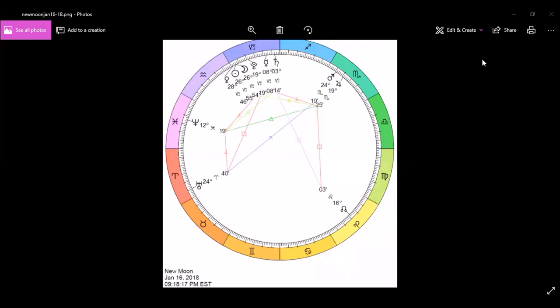Hey guys, it's me Stormy, and it is just about time to have this new moon in Capricorn. It's going to be happening January 16th at 28 degrees of Capricorn, which we can see indicated right here on the chart.